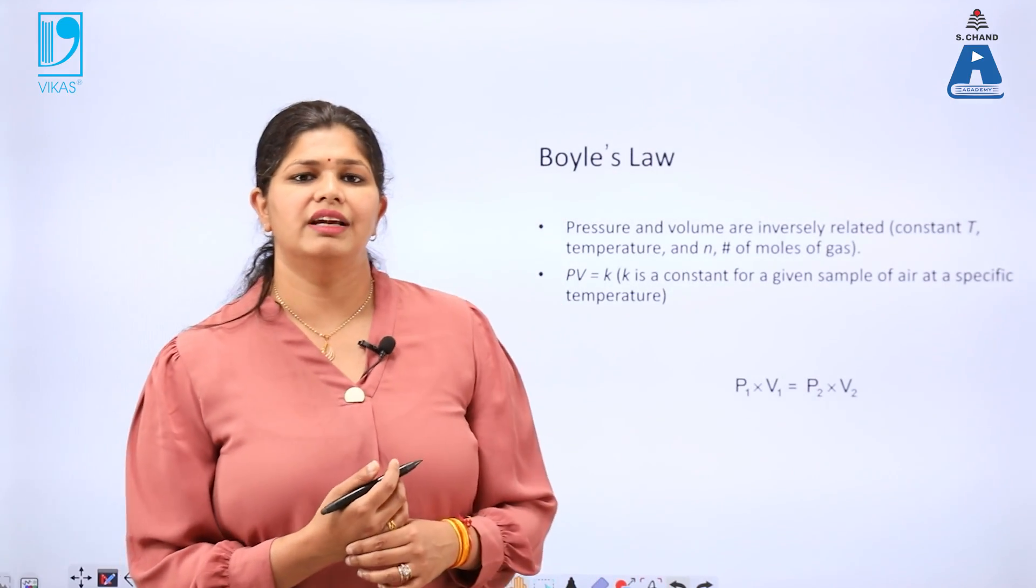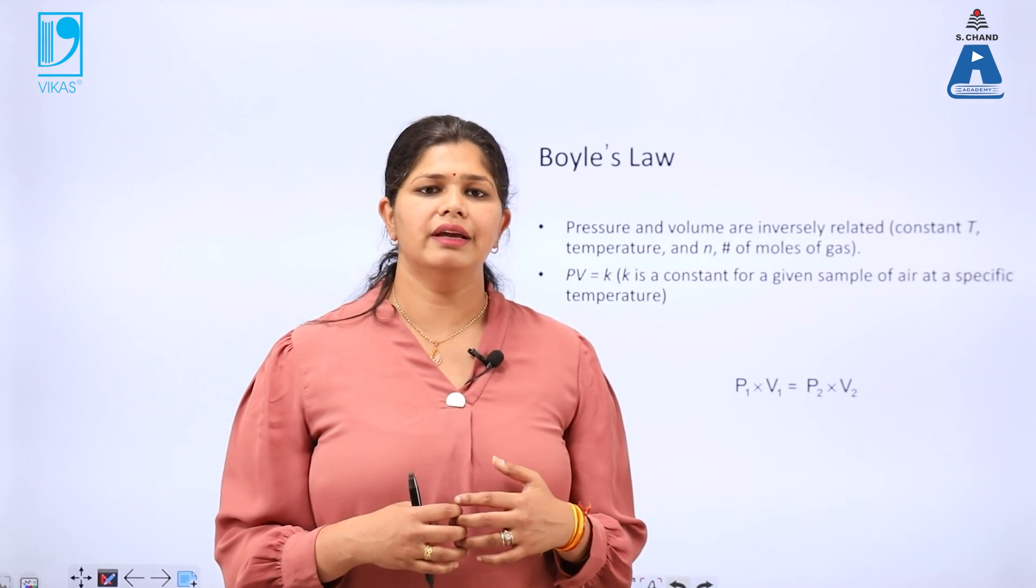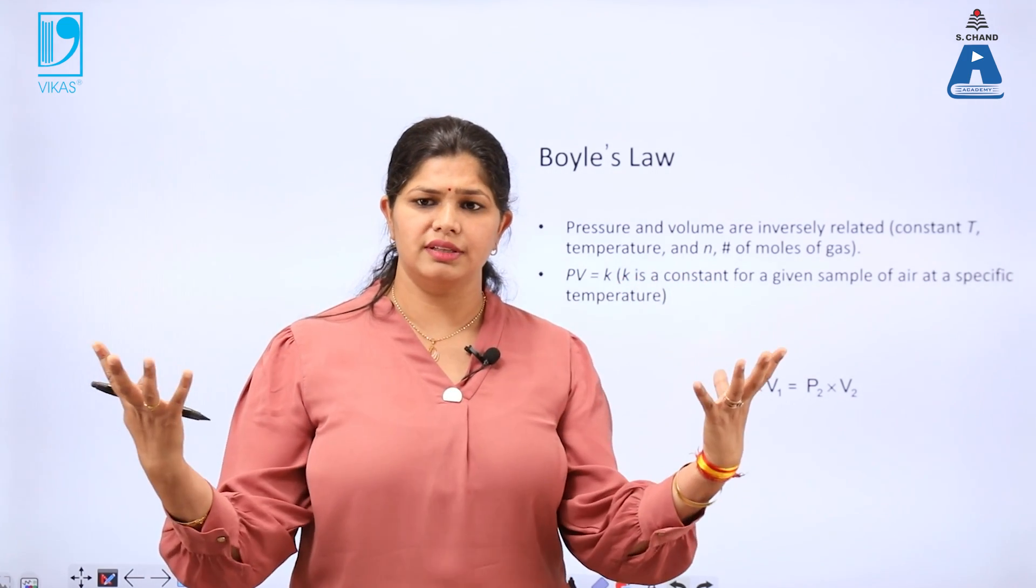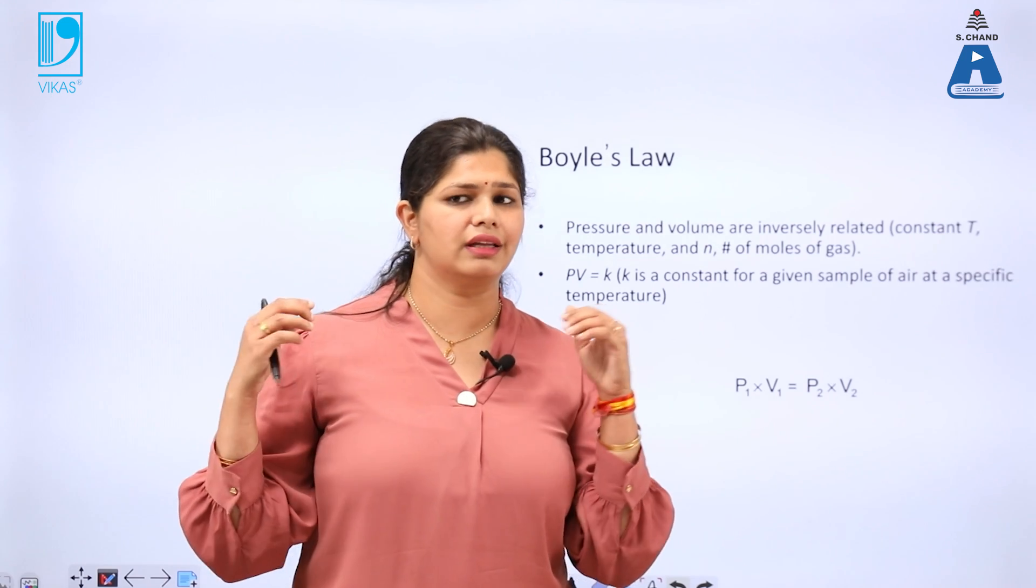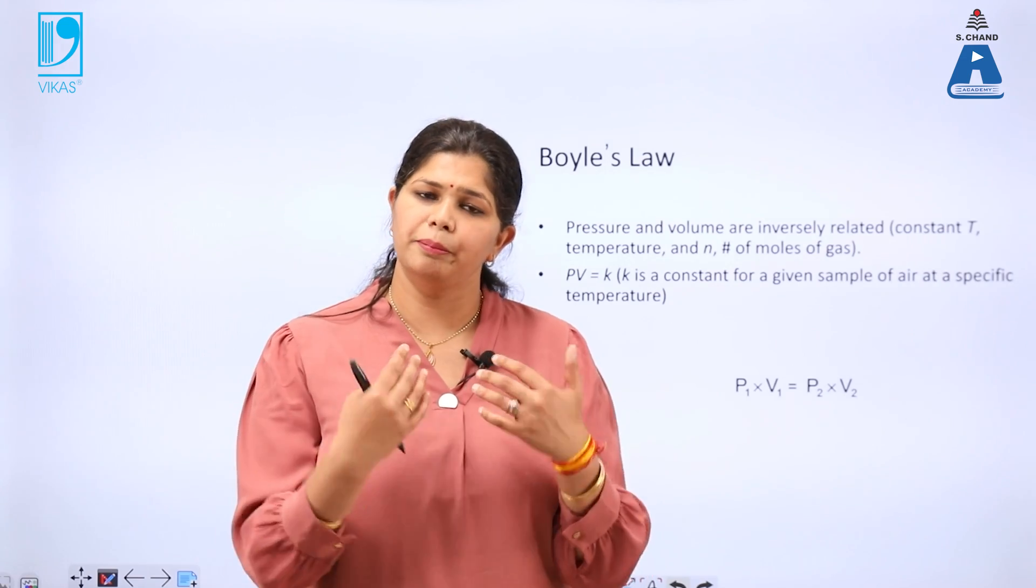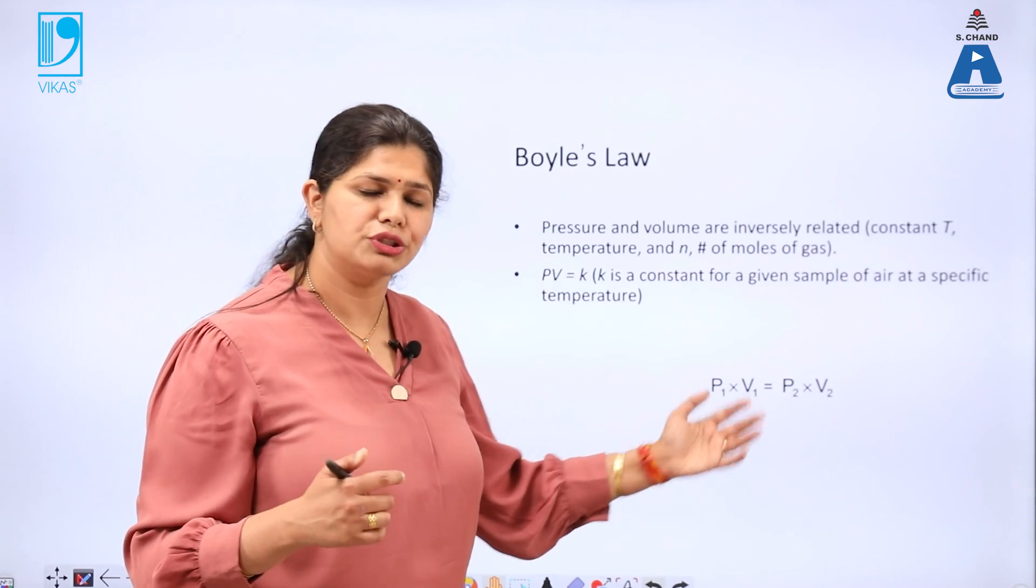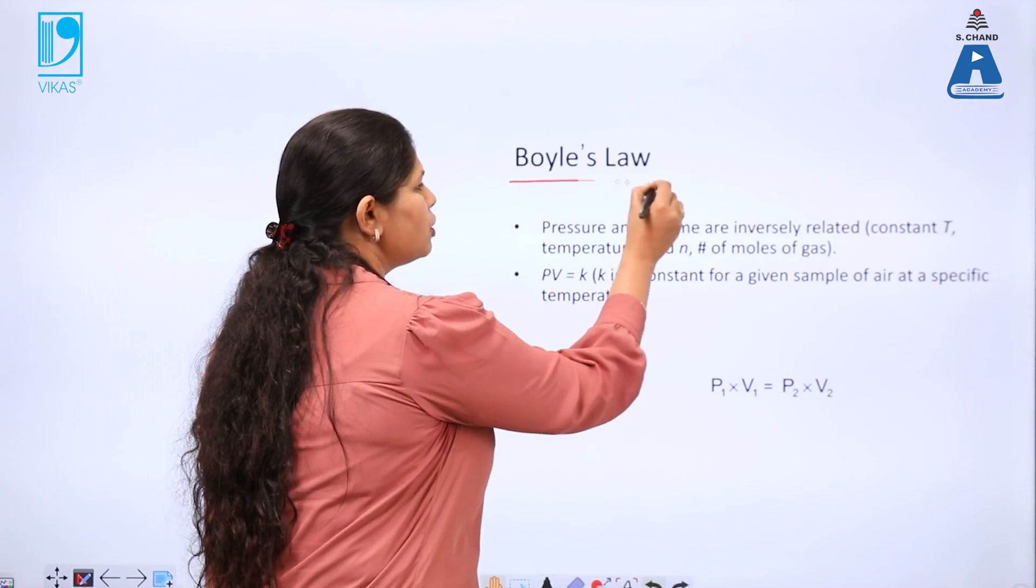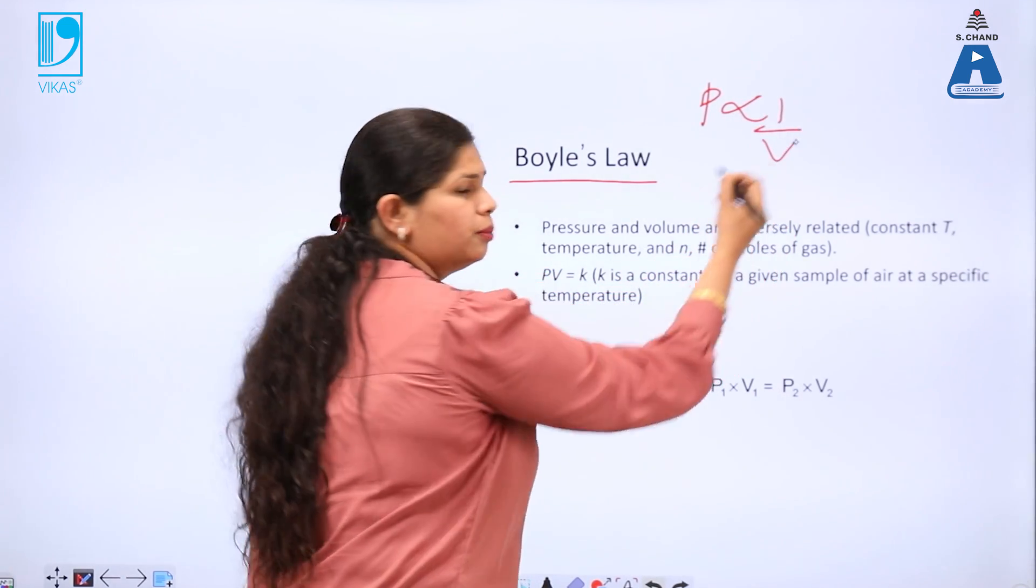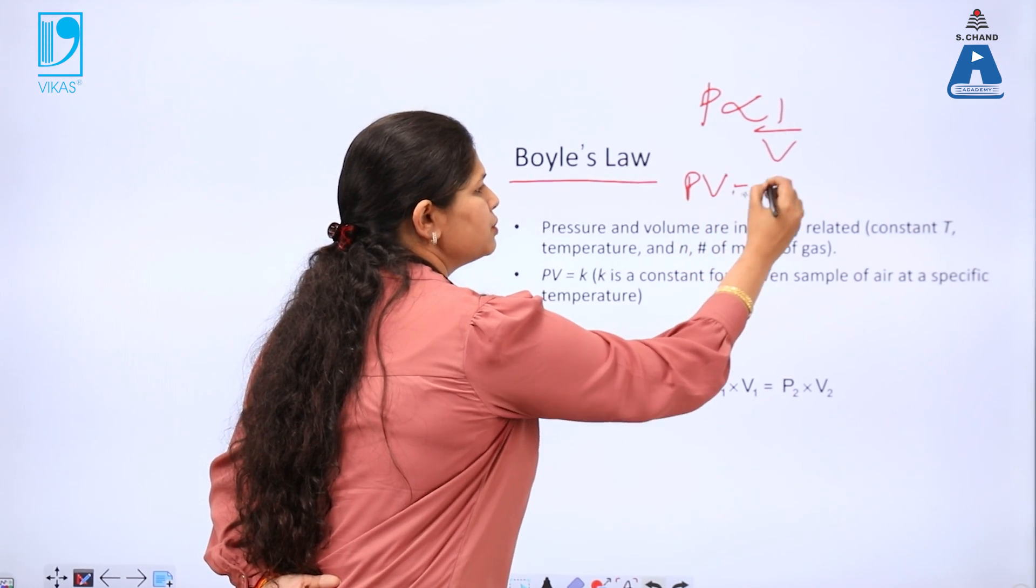Before beginning the real gas, one should know what is an ideal gas. For this, empirically, Boyle, Charles, Dalton, Avogadro, these were the scientists that carried out experimental analysis on gases and predicted empirically that the pressure of the gas is inversely proportional to volume. Boyle's law states that the pressure of the gas is inversely proportional to volume or PV is equal to constant.